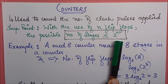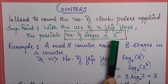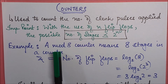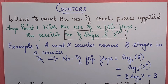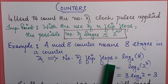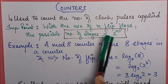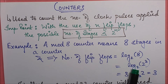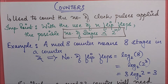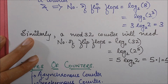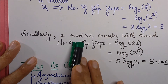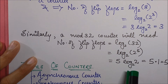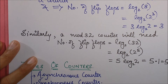If a counter uses all the stages it equals 2^n; if it uses fewer, it will be less than that. For example, take a Mod 8 counter, which has 8 stages. The number of flip-flops required is log base 2 of 8, which equals log base 2 of 2^3, giving 3 flip-flops. Similarly, for a Mod 32 counter: log base 2 of 32 equals log base 2 of 2^5, which is 5. So you need five flip-flops.